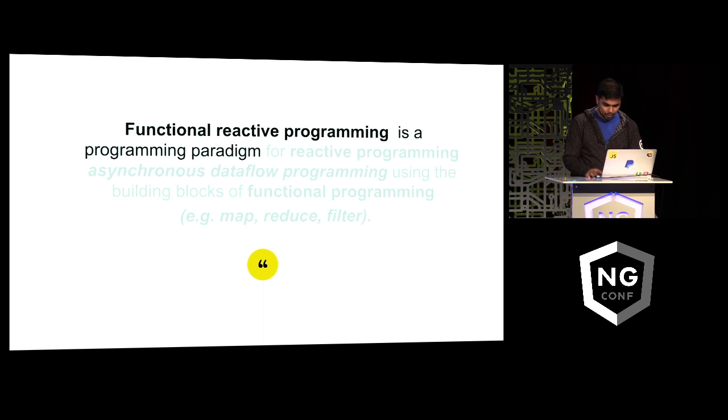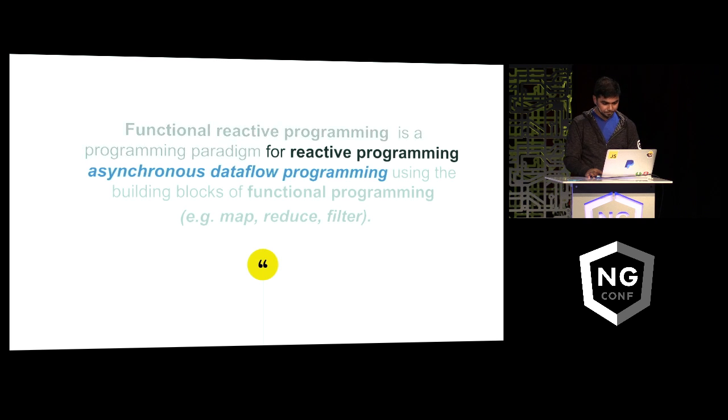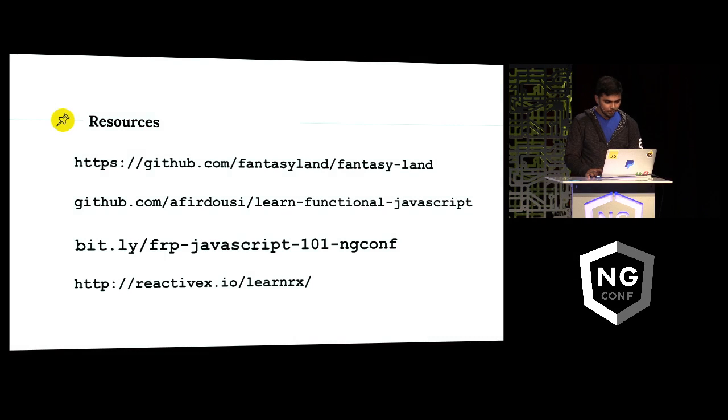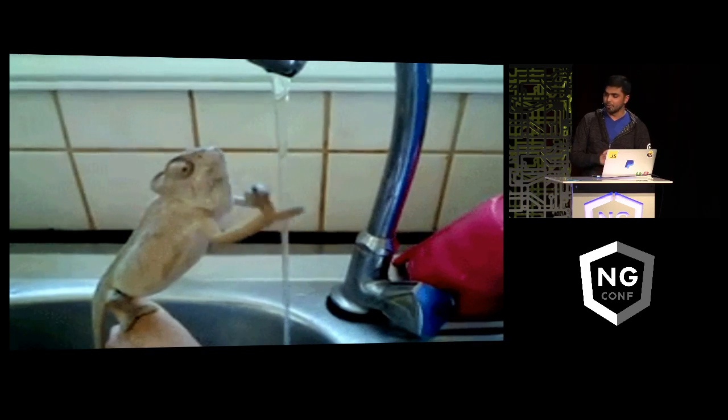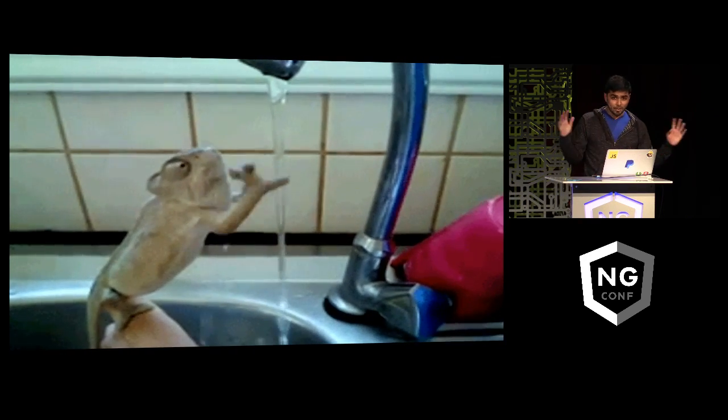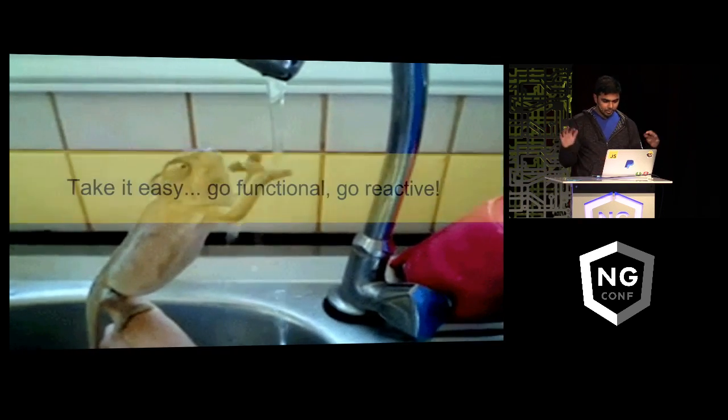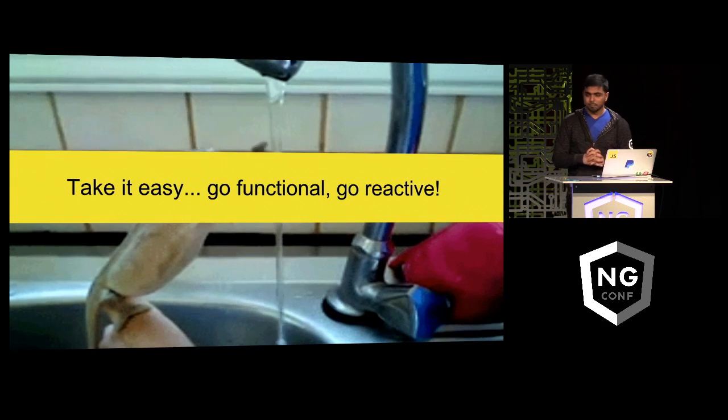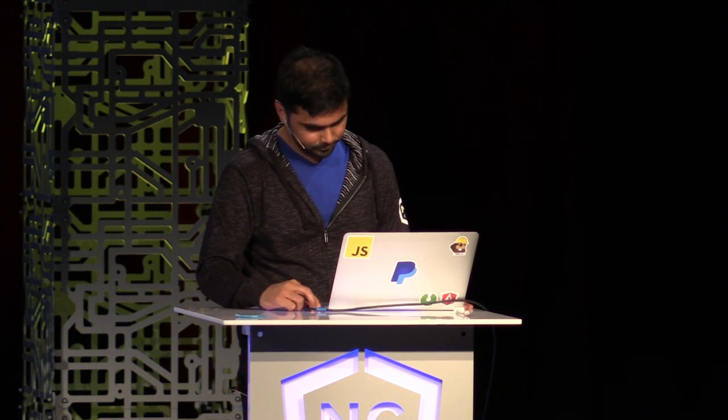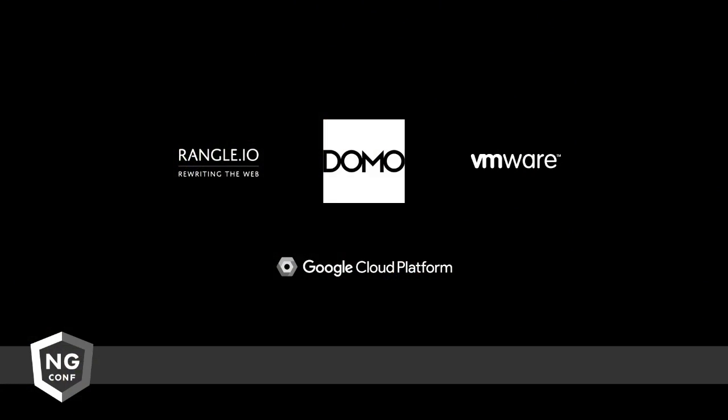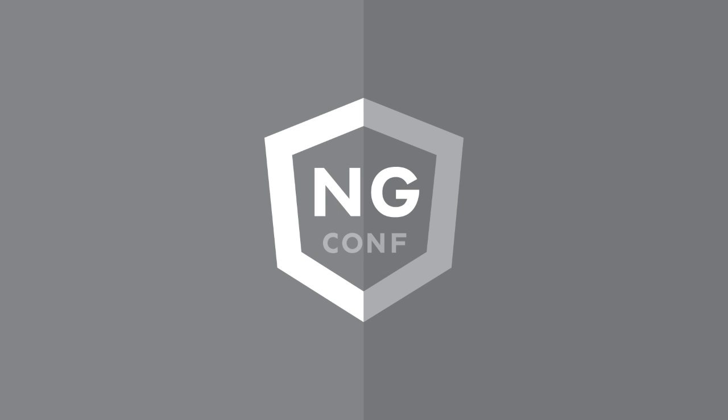So in conclusion, FRP is a programming paradigm for reactive programming using the building blocks of functional programming. There are a couple of resources I'll share. So start catching all the streams out there. But there's a lot of stuff to learn, so learn and work towards it over time. Take it easy. Thank you very much.